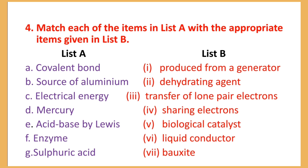Number F: Enzyme — List number 5: biological catalyst. Number G: Sulfuric acid — List number 2: dehydrating agent.